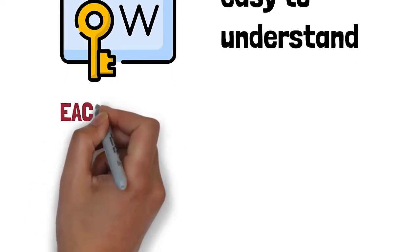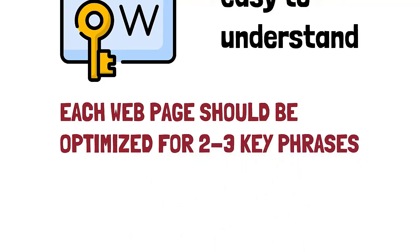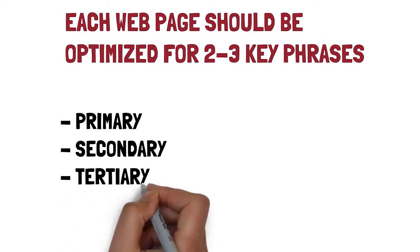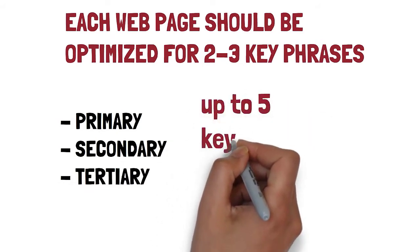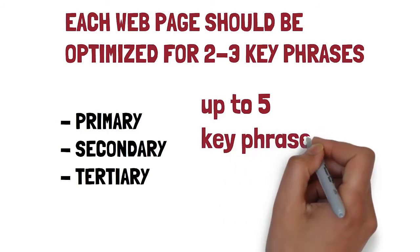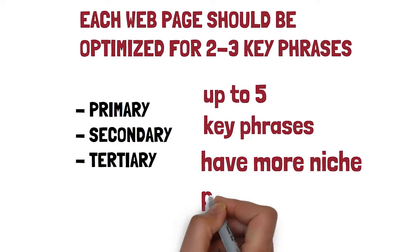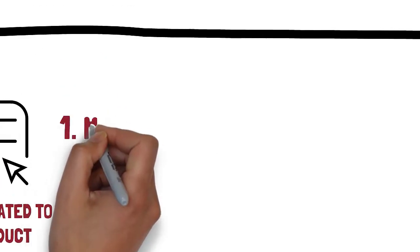To optimize your content, it is crucial that each web page should be optimized for two to three key phrases. You should have the primary key phrase, the secondary, and tertiary. Keep in mind that a web page can be optimized for up to five key phrases. However, it is always advisable to have more niche pages than bleary pages. To do this properly, we have provided a list of guidelines.